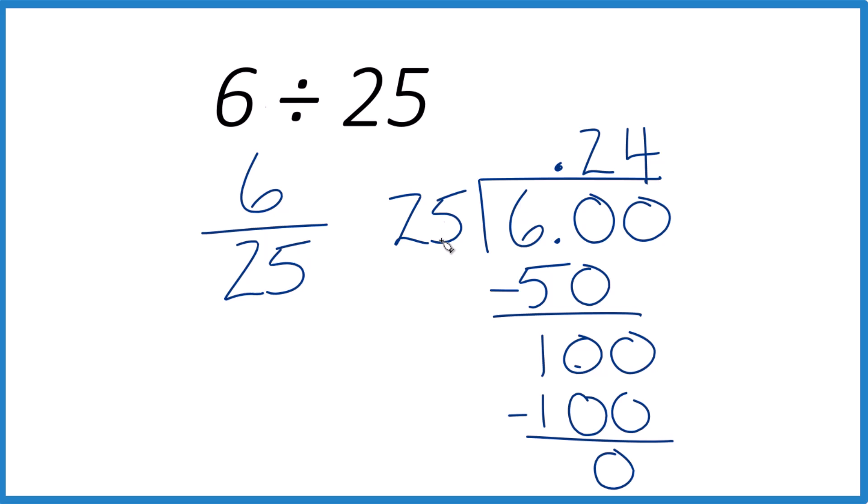So 6 divided by 25, that's 0.24. Usually put a 0 here just so we remember the decimal point. If you take 0.24 times 25, you will get 6.